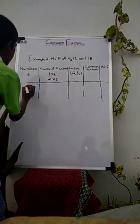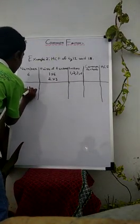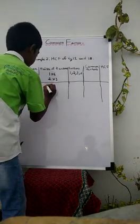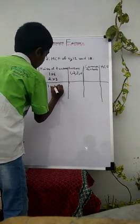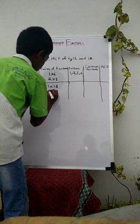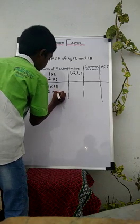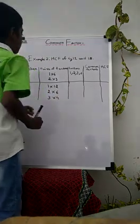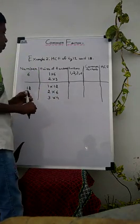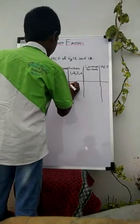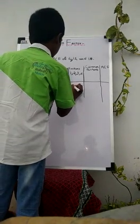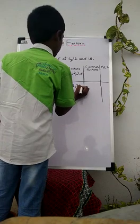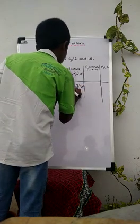Number 12. Pairs of factors of number 12 are: 1 × 12, 2 × 6, and 3 × 4. The factors of 12 are 1, 2, 3, 4, 6, and 12.